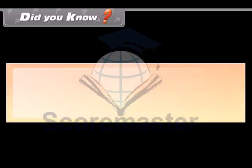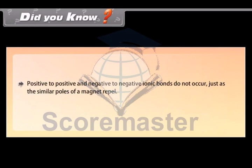Did you know? Positive to positive and negative to negative ionic bonds do not occur just as the similar poles of a magnet repel.